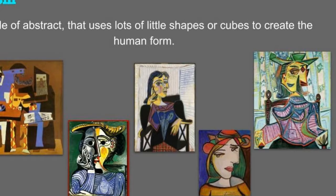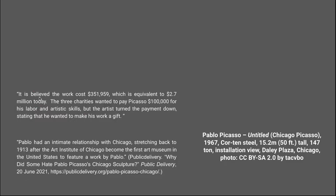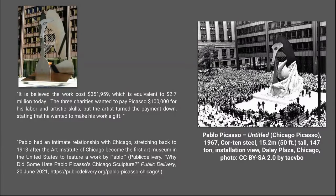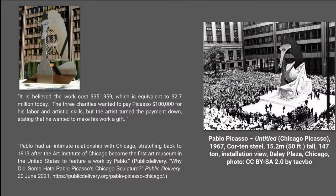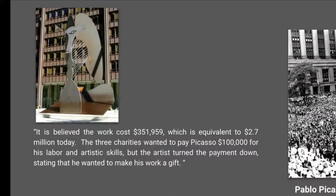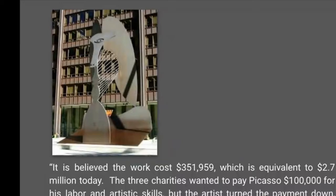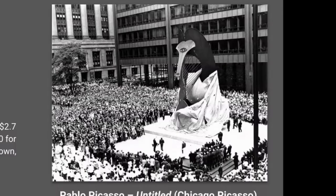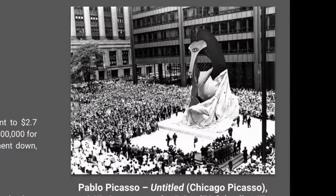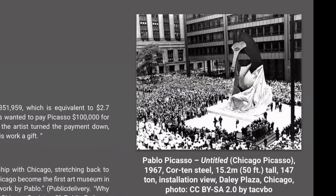Here in Chicago he has one artwork which is actually untitled, but it's believed that in today's time frame it would be worth 2.7 million dollars to make. Charities actually wanted to pay him for his labor and art skills, but he turned it down because he wanted to make it a gift — probably because Chicago was the first art museum in the United States to feature his work. One of his other pieces of artwork has sold for almost 200 million dollars, so you can think about just how influential Pablo Picasso is.